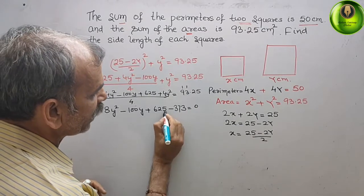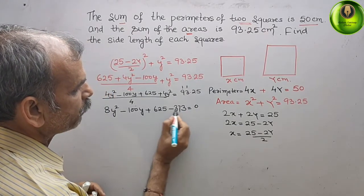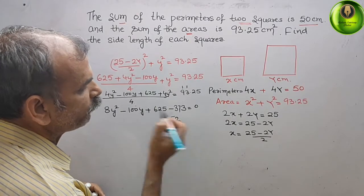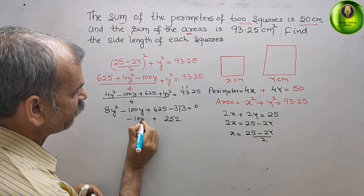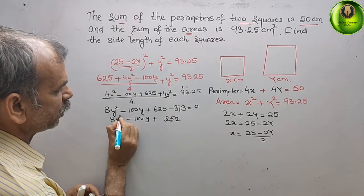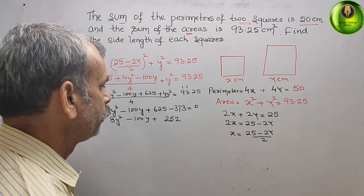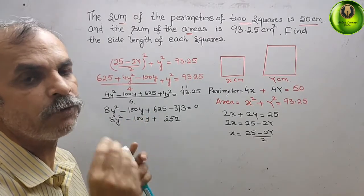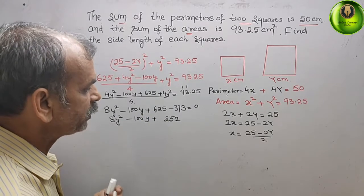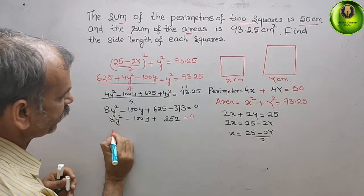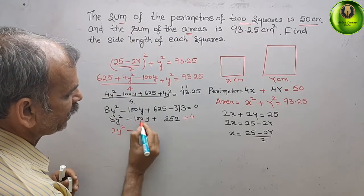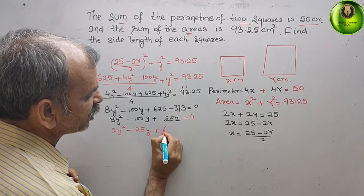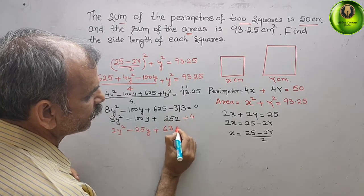Subtracting 373 from both sides: 8y² − 100y + 625 − 373 = 0, which gives 8y² − 100y + 252 = 0. Every number is even and divisible by 4, so we divide through by 4. You get 2y² − 25y + 63 = 0.